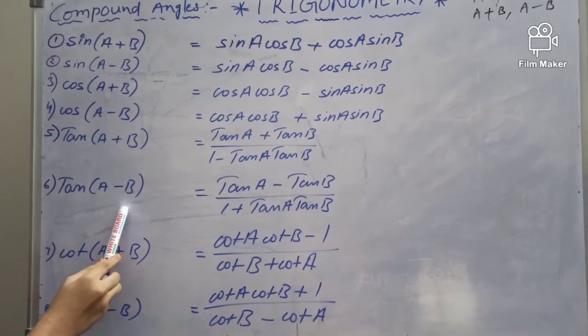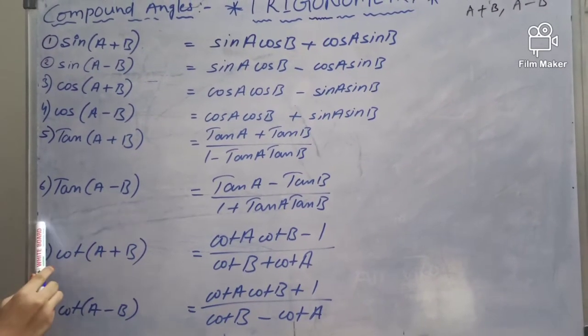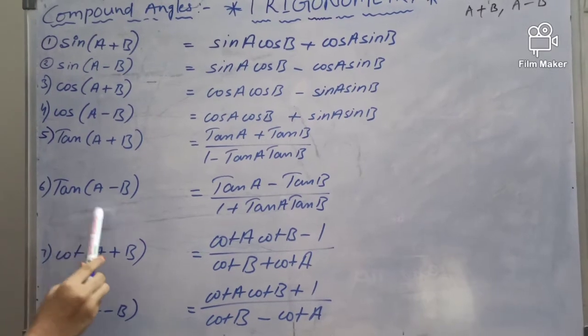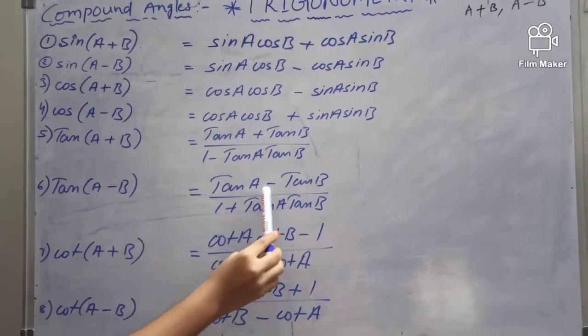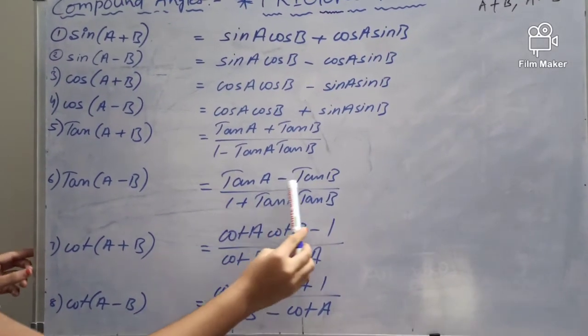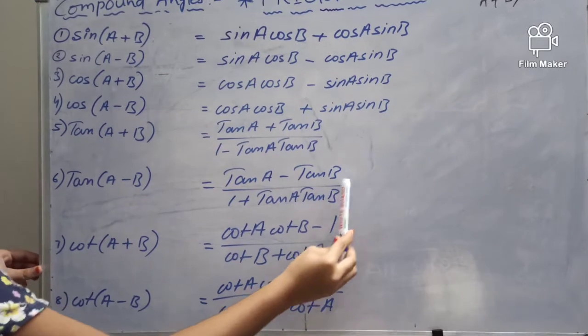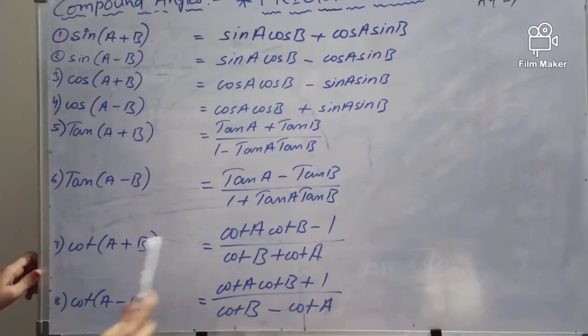For tan A minus B: sin A minus B divided by cos A minus B — here the numerator gives minus, and the denominator gives plus. So tan A minus B equals tan A minus tan B divided by 1 plus tan A tan B.